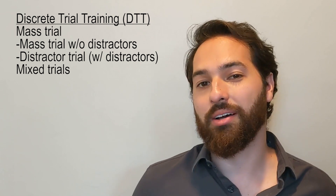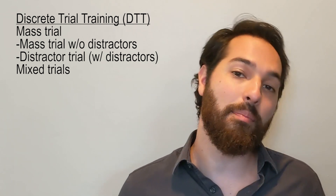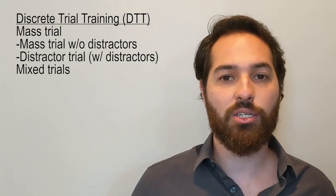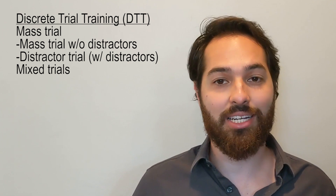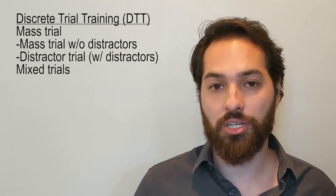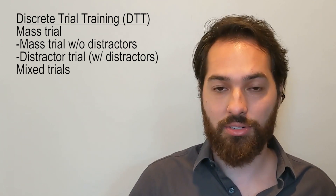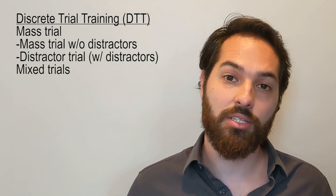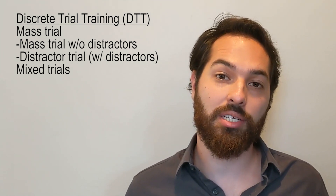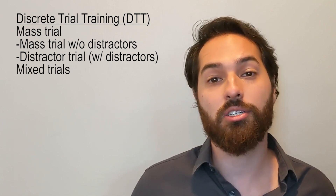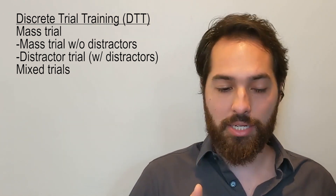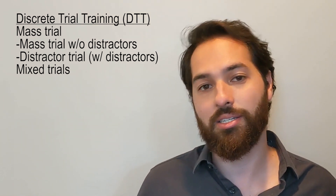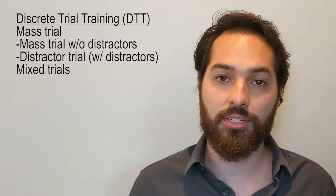A distractor trial presents the same SD or instruction repeatedly, like 'touch car,' but there are other items in the array on the table that serve as distractors — things the learner does not know yet. Mixed trials are the opposite of mass trials: you switch up the SD or instruction every single time, which helps the child learn to discriminate between different SDs.